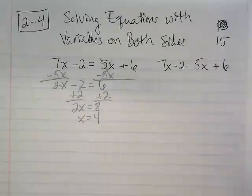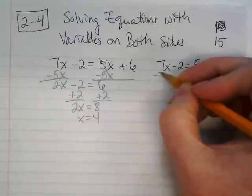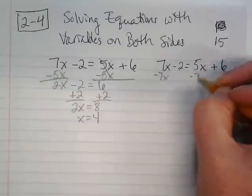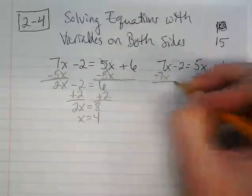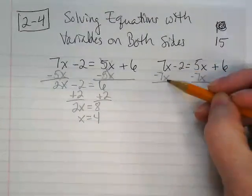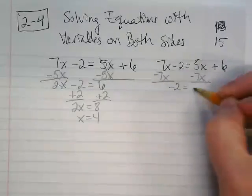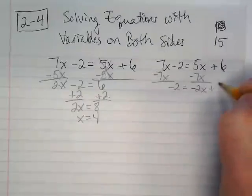I want to do it the other way, so you see it doesn't really matter which one you start with. Over here we started with the 5x. What if we start with the 7x? Just like I don't really like working with fractions but I can, I don't really like working with negatives if I can avoid them, but we're going to end up with a negative here and it's okay. 7x minus 7x is going to be 0. We're going to have negative 2 over here equals negative 2x plus 6.